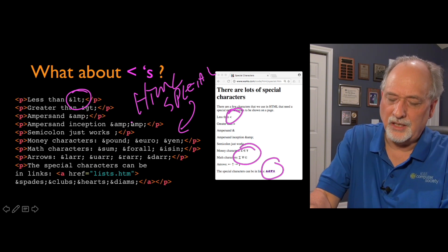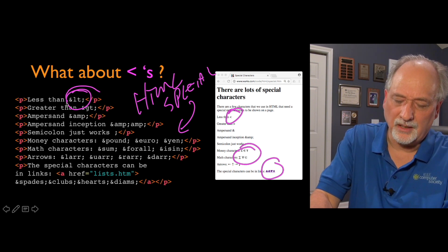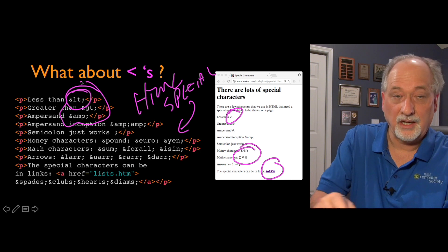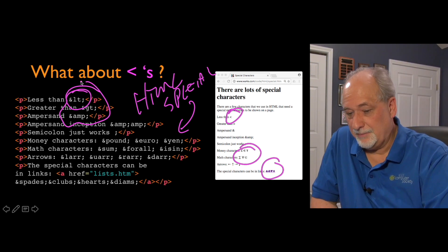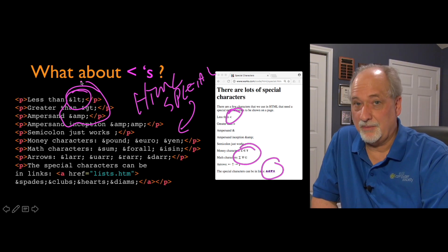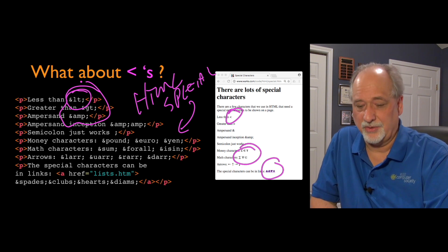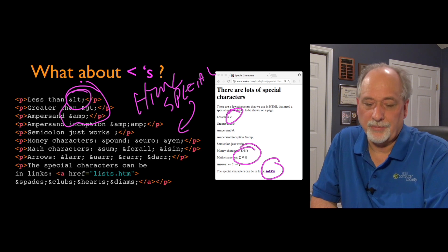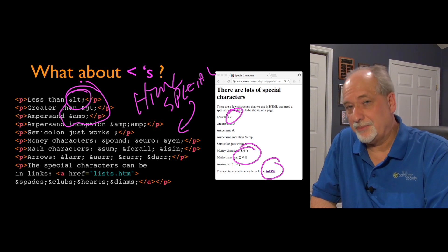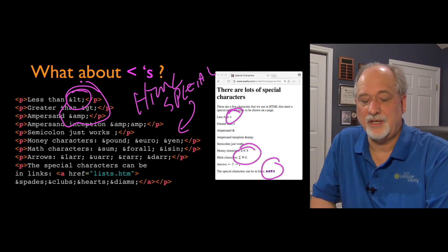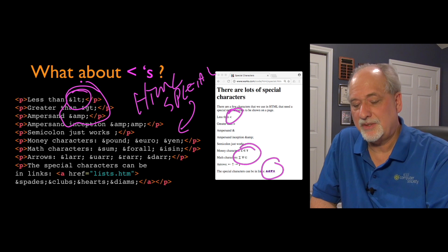The key ones you really need to know are less-than, greater-than, and ampersand — those are the truly special characters in HTML. To represent less-than you use &lt;, greater-than is &gt;, and to get an ampersand itself you use &amp; — those are the essential ones to get right.